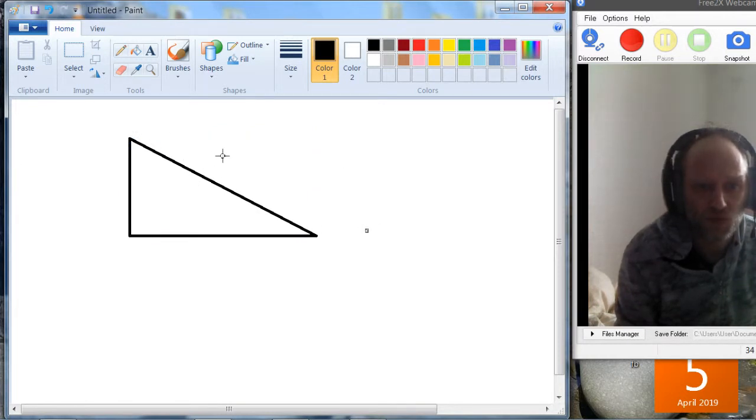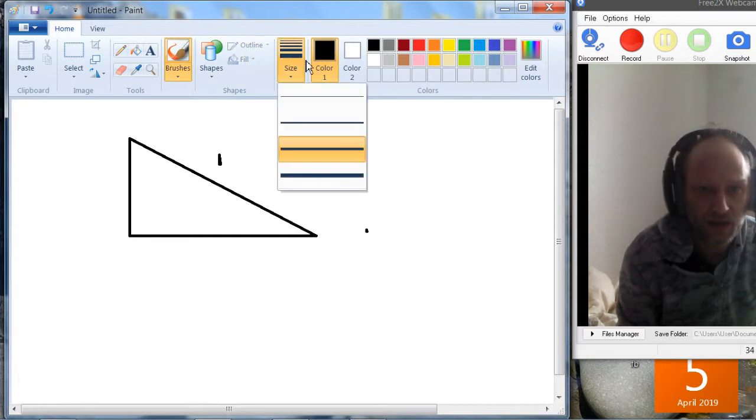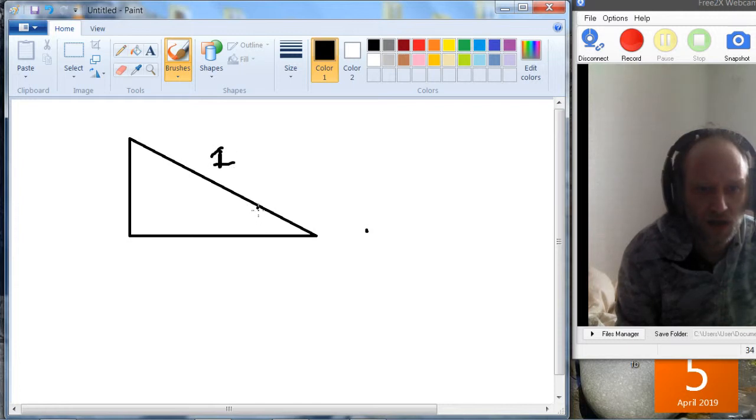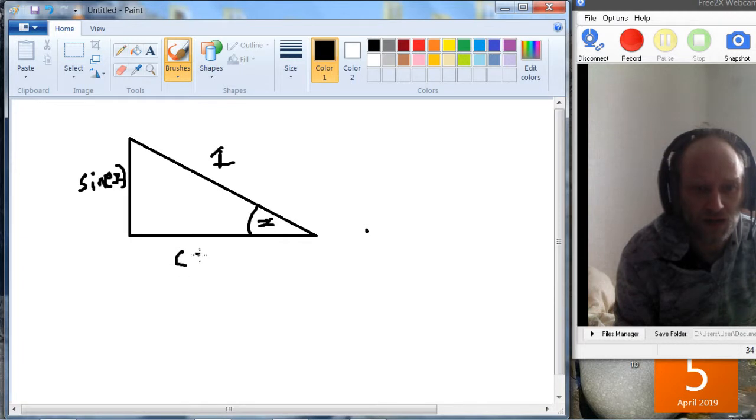So when this is 1, I need a pen. When this is 1, and this angle is known, then this would be sin x and cos x. So cos x is along the adjacent.